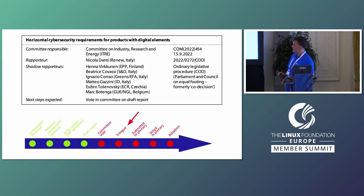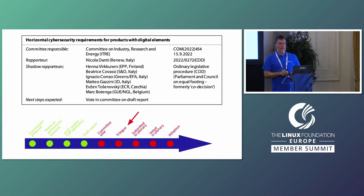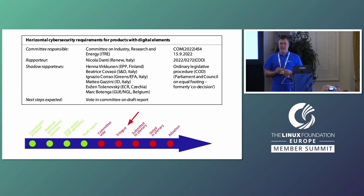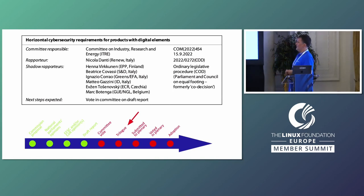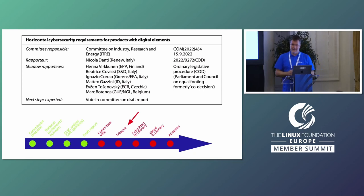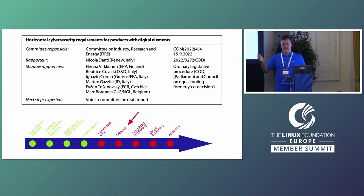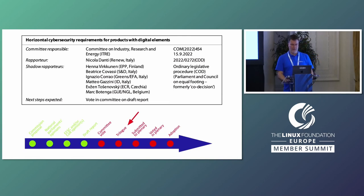Where does it currently stand? This is where the red arrow points to the trilogues — this is the next step. Trilogues mean the European Commission, the Parliament, and the European Council — the member state representation — are getting together and hashing out the next version of the text in a three-way discussion. We have briefed all three groups intensively, repeatedly, and in detail, and we hope for good results. The trilogues are supposed to begin late this month or early next month, and then it goes to a plenary vote if there's a successful outcome.